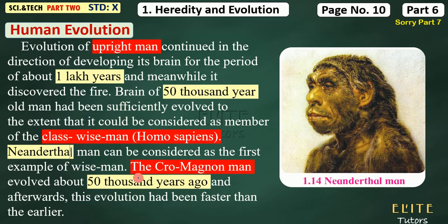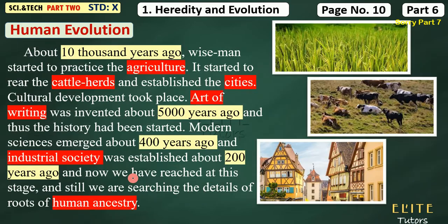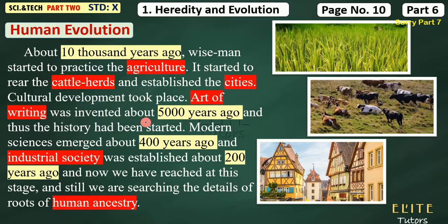After the evolution of Cro-Magnon man, evolution was very fast. About 10,000 years ago, wise men — Homo sapiens — started to practice agriculture, reared cattle herds, and established cities. Cultural development took place. The art of writing was invented about 5,000 years ago. When writing started, records and pictures came, and history had begun.